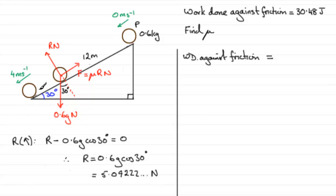Well, it's equal to 30.48, but also it's equal to the force F, which is μR, times 12. So we've basically got F multiplied by 12, but F is μR, so we've got μ multiplied by the 5.0922... and that's multiplied by 12.